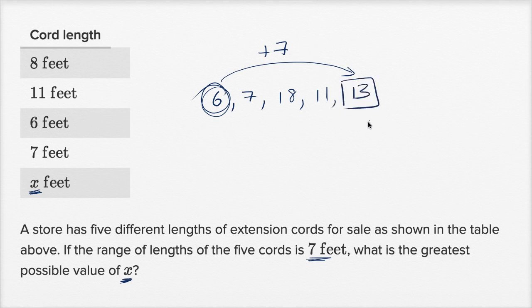So x, the highest possible value for x, is 13. So x would be equal to 13. So x is 13 right over here.